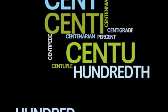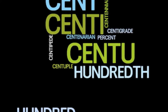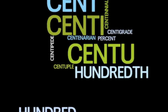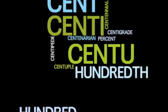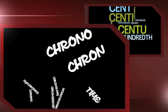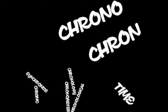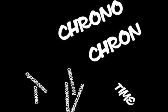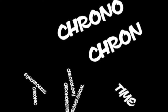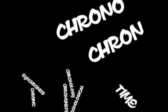Cent, centi, and centu mean hundred or hundredth, such as centipede, centuple, centenarian, percent, and centigrade. And chron or chrono mean time, such as chronometer, chronology, chronological, and synchronize.